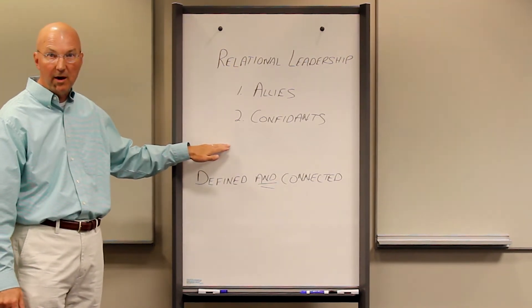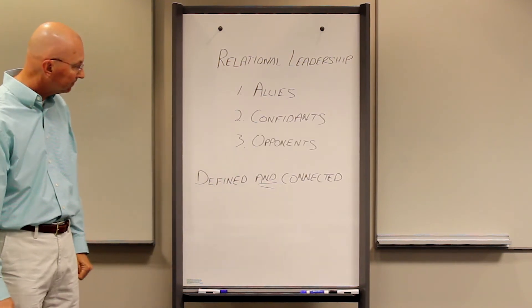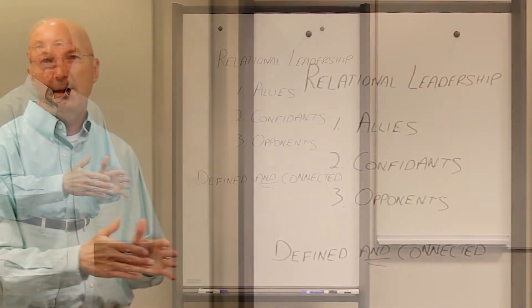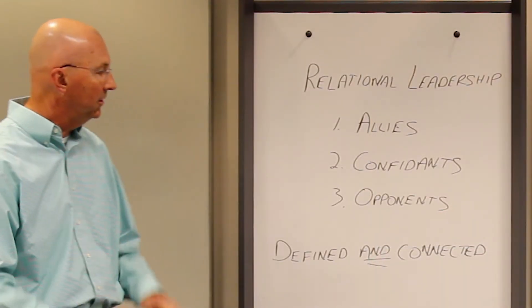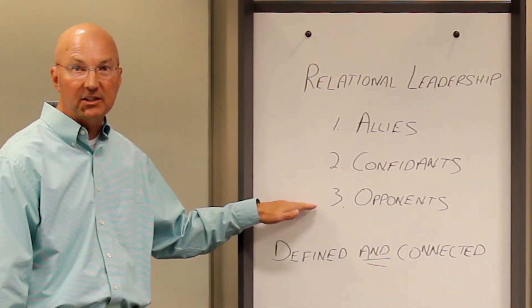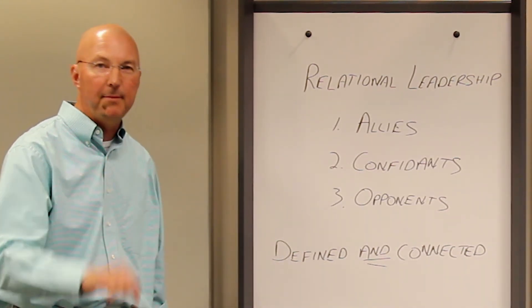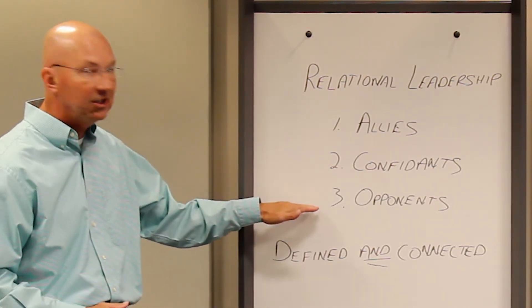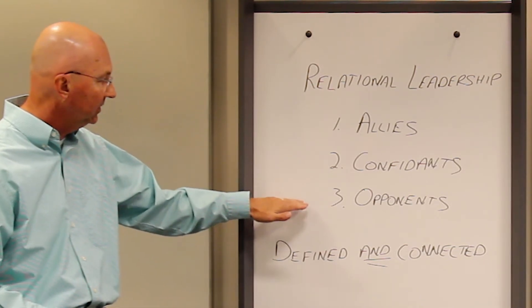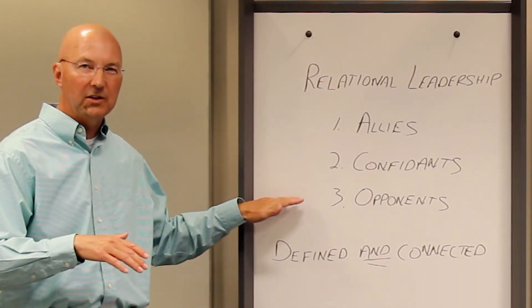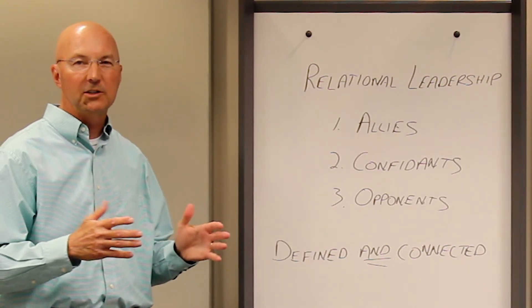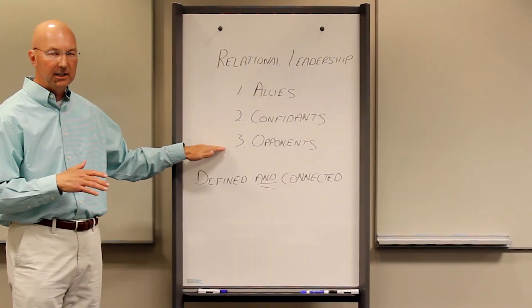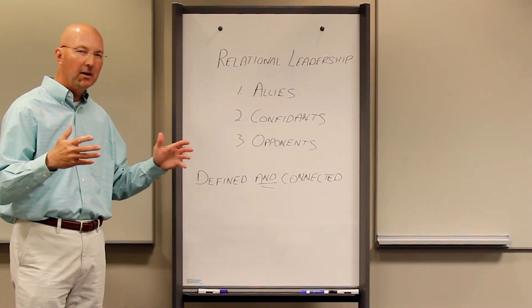The third group that I want to talk about is opponents. These are folks who are not on board with the mission. These are people who may be opposing a certain initiative. My temptation always as a leader is I start to label those people as just bad people, or if they would just get on board with us or get out of the way, or if they would just see it the way I see it. But Bolsinger reminds us opponents can play an important part.